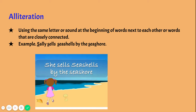And lastly, we're going to talk about alliteration. Alliteration is when you use the same letter or sound at the beginning of words that are next to each other or very closely connected. In this example, 'Sally sells seashells by the seashore' — the words Sally, sells, seashells, and seashore all start with the letter S, and that repetition of the letter makes it alliteration. 'Seashore' is closely connected to the rest of the sentence by the words 'by the.'